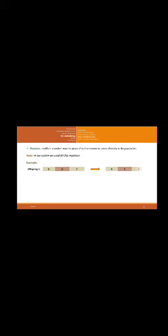For mutation, we modify in a random way the genes of the chromosome to create diversity in the population. In our system we use a bit-flip mutation. For example, with offspring one, the selected gene is modified: zero becomes one, one becomes zero.